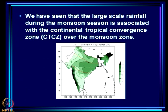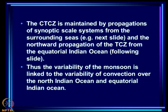Today I am going to talk about the Indian Ocean and the monsoon. As you know, the large-scale rainfall during the monsoon season is associated with the continental tropical convergence zone, that is the CTCZ, over the monsoon zone. We get an organized system over the monsoon zone which leads to the large-scale rainfall.